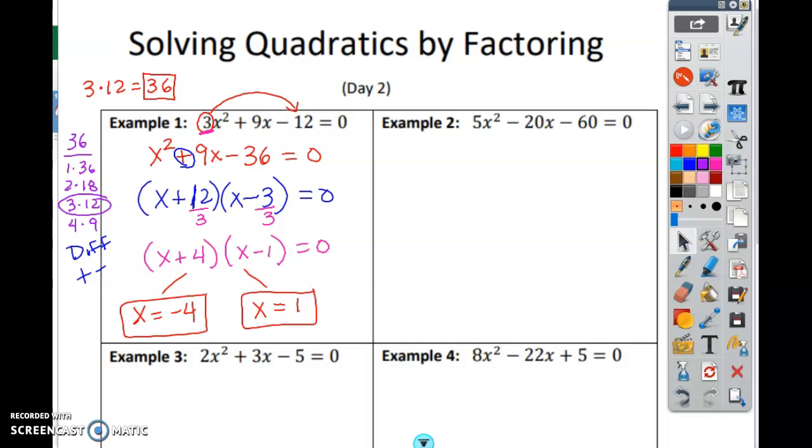I want you to pause the video and look at the example I just did with you and see if there's anything that you don't understand. The first thing I did was multiply 3 times 12 and it gave me 36. 3 times 12 is 36. So I need things that multiply and give me 36 and a sum or difference of 9. So I listed my factors here.